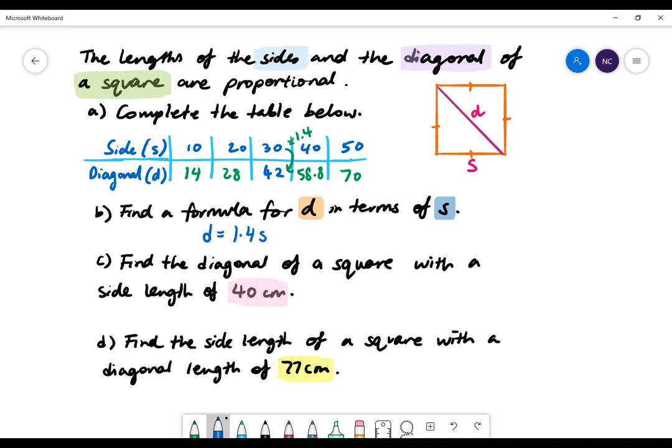Part C: Find the diagonal of a square with a side length of 40. 40 represents S. So to find D, we'll simply substitute 40 into our formula. We'll be left with D equals 56.